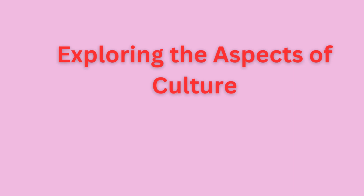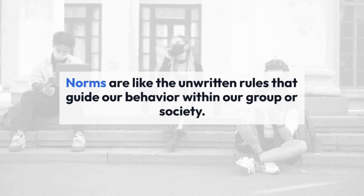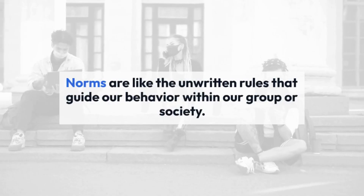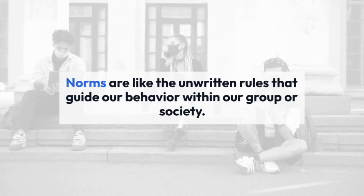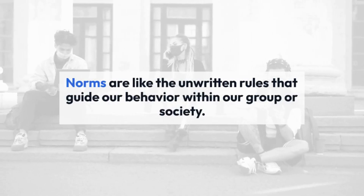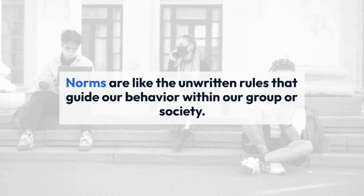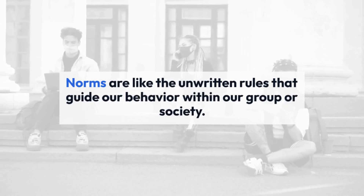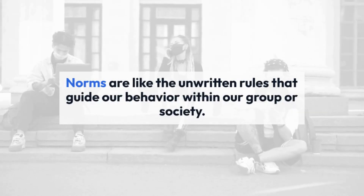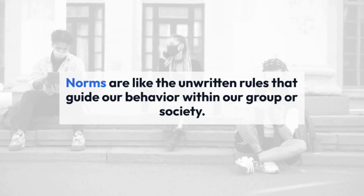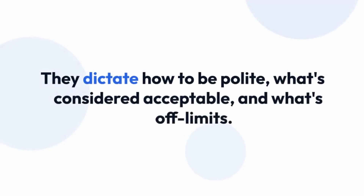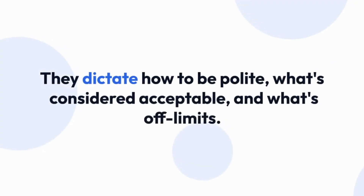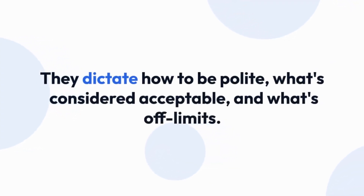The first aspect of culture is norms. Norms are like the unwritten rules that guide our behavior within our group or society. They dictate how to be polite, what's considered acceptable, and what's off limits.